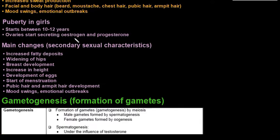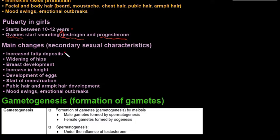Puberty in girls starts a little earlier, around ages 10 to 12 years, when the ovaries start secreting the hormones estrogen and progesterone. In South Africa the British spelling is used, hence the 'o' in front of 'estrogen'. The main secondary sexual characteristics include: increased fatty deposits, widening of hips, breast enlargement, increase in height, development of eggs, start of menstruation, and pubic and armpit hair development, as well as possible mood swings.